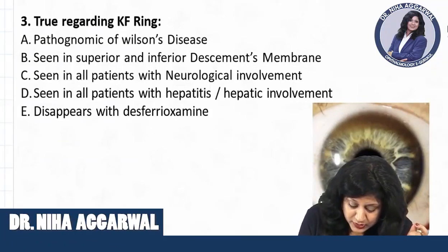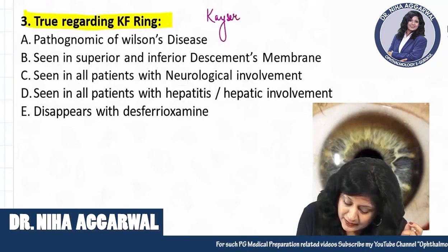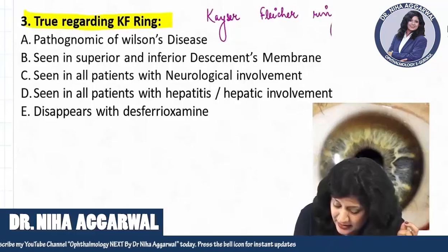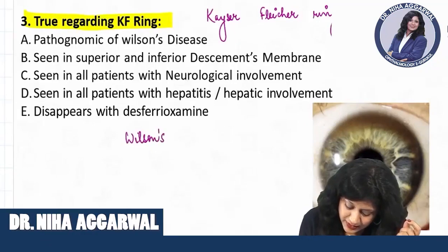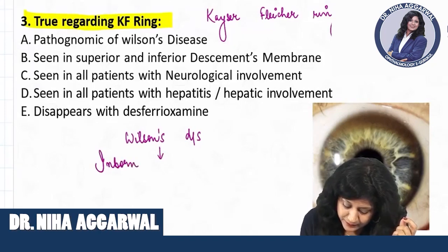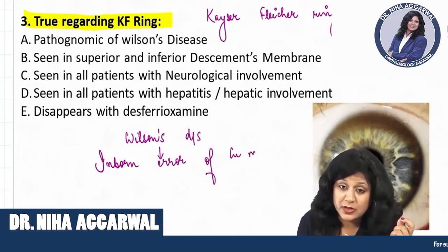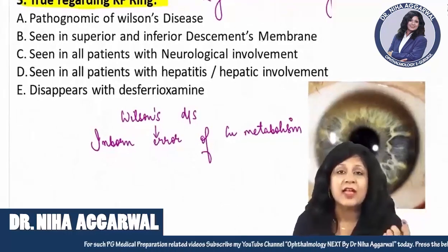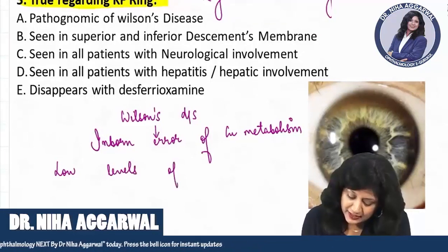They are asking you the true statement regarding the KF ring. What is the KF ring? It is the Kayser-Fleischer ring. Where do you get this? You get this in Wilson's disease — an inborn error of copper metabolism. This is an inborn error of copper metabolism where you are getting the KF ring, and it is associated with the low levels of ceruloplasmin.